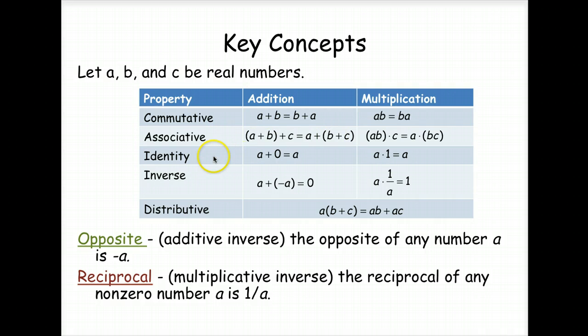The identity property, just think for addition. What can we add to a number and still get the original number? Why a zero, of course. Multiplication. What can we multiply a number by and still get the original number? Well, one. So that's how you remember whether you're going to use a zero or one for the identity property. This depends on if you're adding or multiplying.